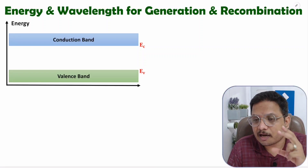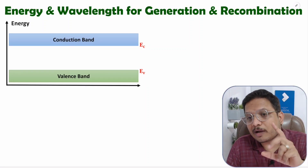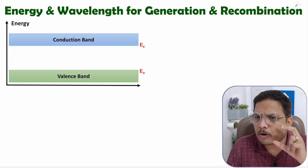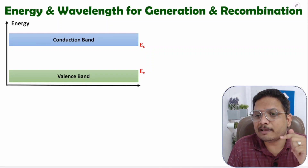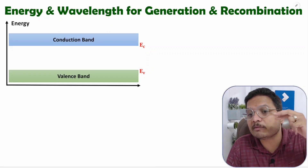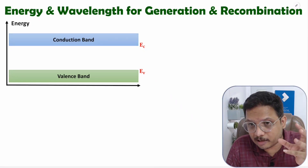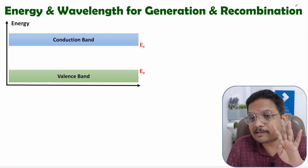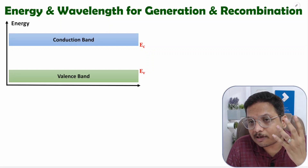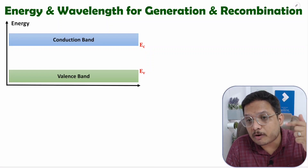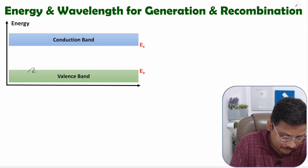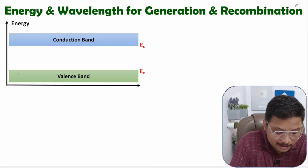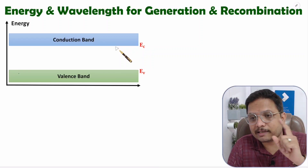Let us see first how generation and recombination take place inside semiconductor material. At zero Kelvin temperature, all the valence electrons will be there in the valence band. Valence electrons are the electrons which are in the outermost orbit of the silicon atom. Silicon has four valence electrons, and those four electrons are connected by covalent bonds with their neighbor atoms. So all those valence electrons will be in the valence band, and the conduction band will be empty at zero Kelvin temperature.